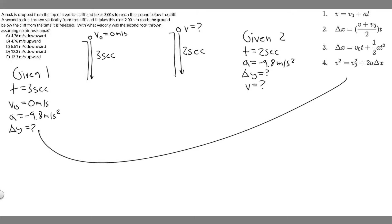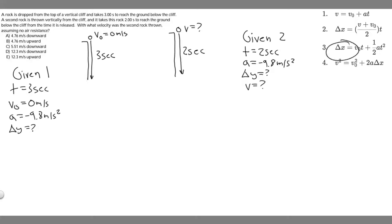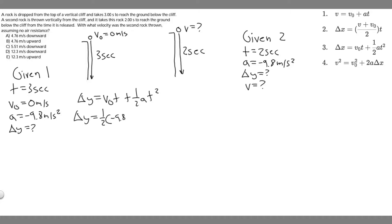Looking at our kinematic equations, we're given t, v sub zero, and a, and we're trying to find delta y. The equation we want to use is delta y equals v sub zero times t plus one half a t squared. Plugging in: v sub zero is zero, so that term drops out. It's just one half times minus 9.8 multiplied by three squared. That gives 0.5 times minus 9.8 times 9, and when you compute that, delta y equals minus 44.1 meters. So the height of the cliff is 44.1 meters.